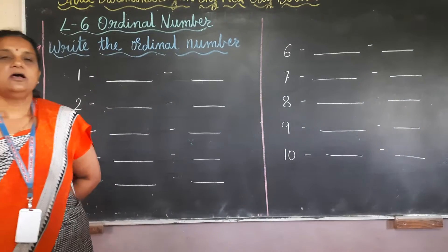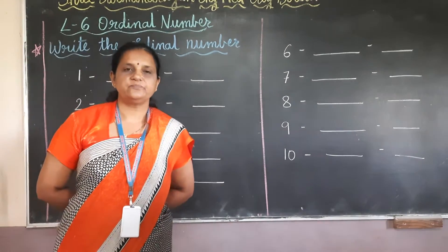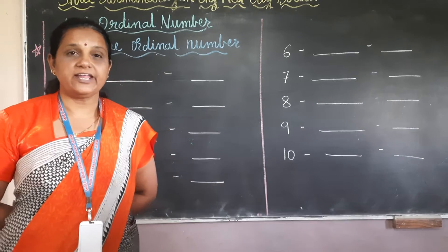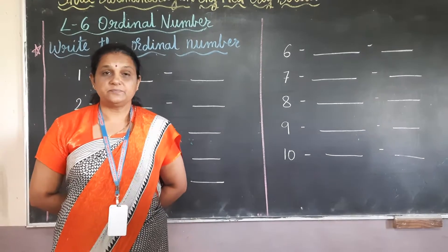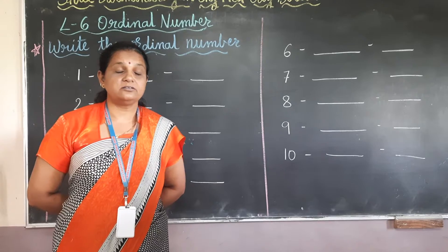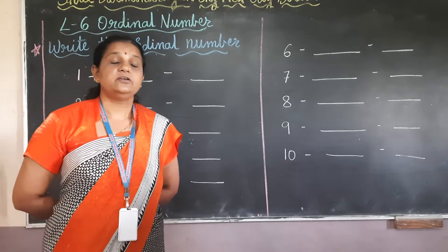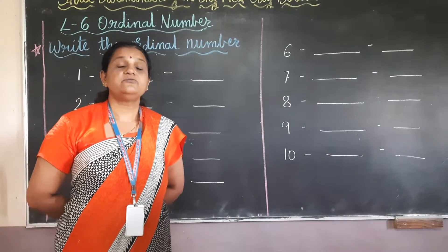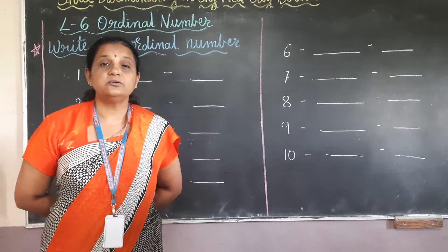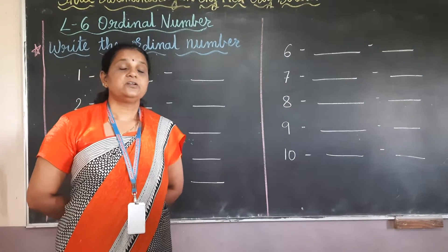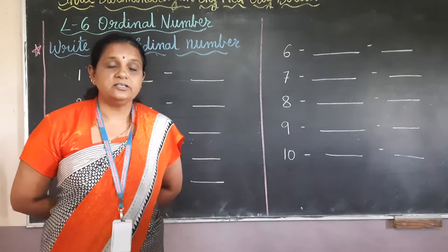What is an Ordinal Number? If we get a rank, we will not just say 1 rank, 2 rank, 3 rank. We will say I got 1st rank, 2nd position, 3rd position. Those are called Ordinal Numbers.